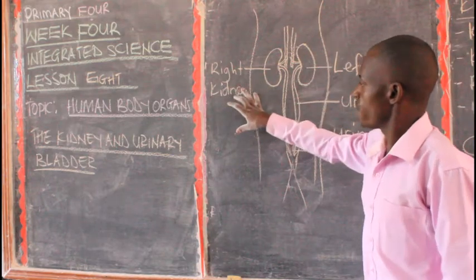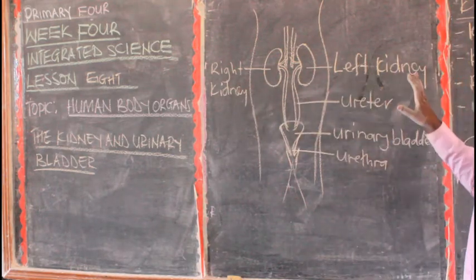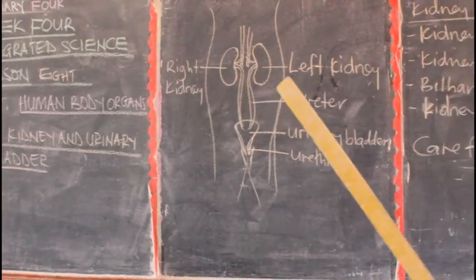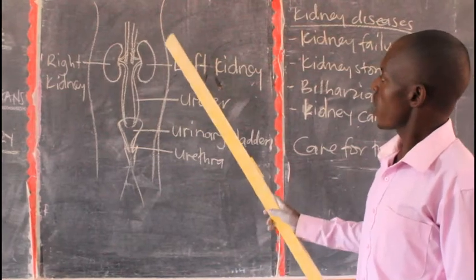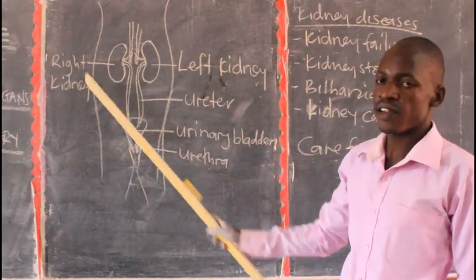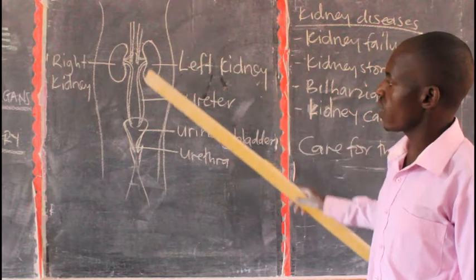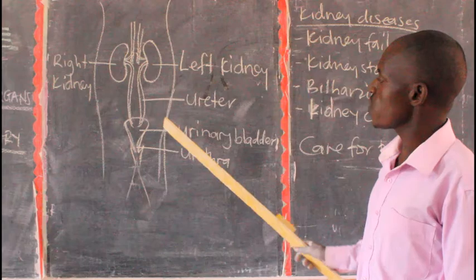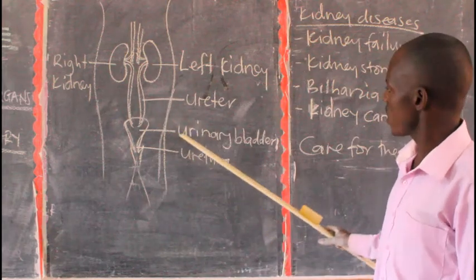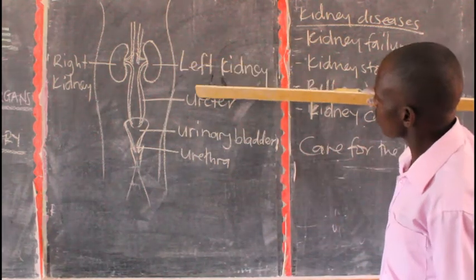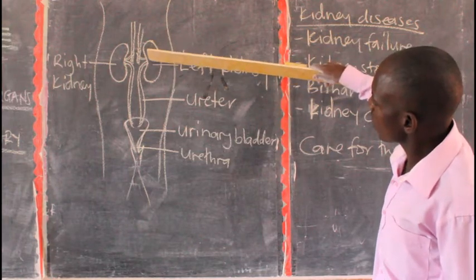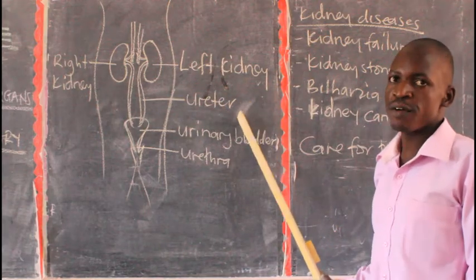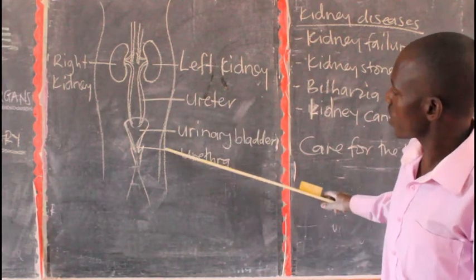When you look at the kidney, it has the following parts. The kidneys are two in number, meaning one person has a pair of kidneys — a left kidney and a right kidney. This is how our kidneys are arranged, along with the urinary bladder in our body. The urinary bladder is where urine is stored, down here. Then we have tubes running from the kidney to the urinary bladder — we call them the ureter.